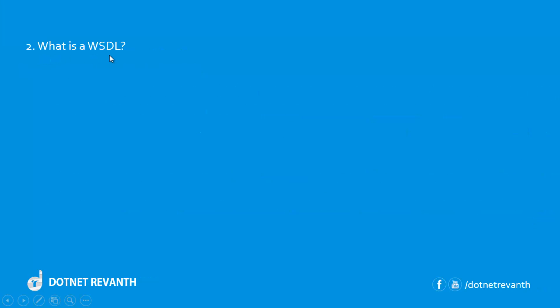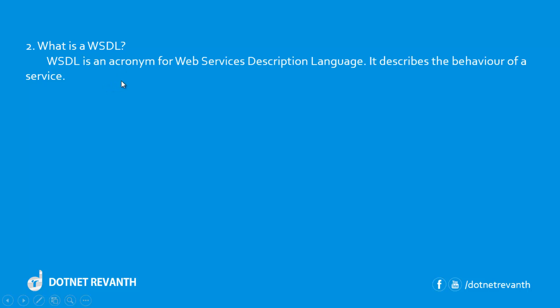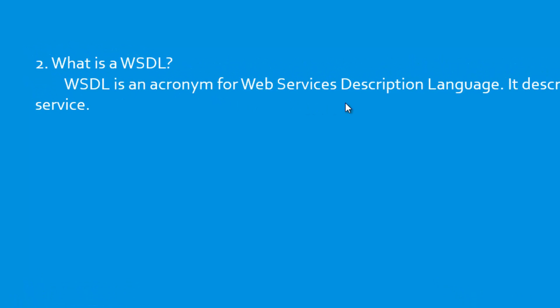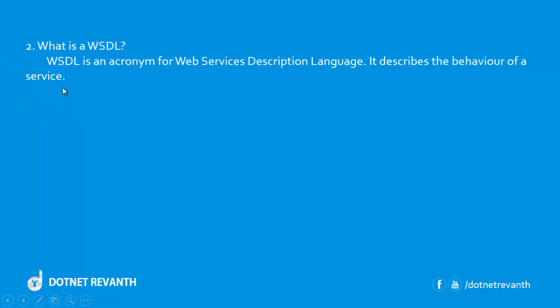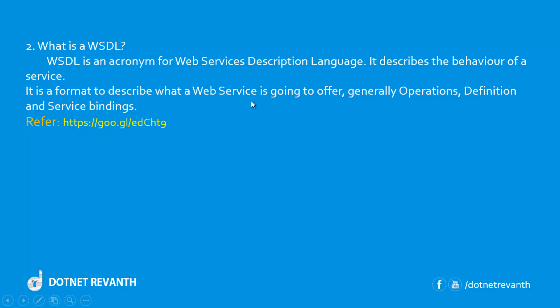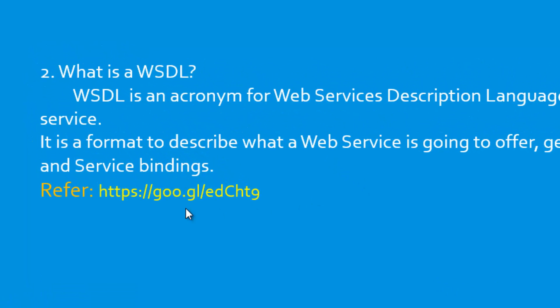Second question: What is WSDL? WSDL is an acronym for Web Services Description Language. It describes the behavior of a service — it is a format to describe what a web service is going to offer. It defines what data types are used in the methods, the input parameters and output parameters. It also defines the service bindings, defines the operations, and gives the overall look of the service. For more information, visit this link.